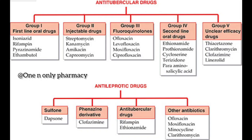The fourth class of anti-leprotic drugs is other antibiotics, which don't belong to a specific class. These include fluoroquinolones — Ofloxacin and Moxifloxacin — plus Minocycline and Clarithromycin. These four drugs are used as other antibiotics in the treatment of leprosy.